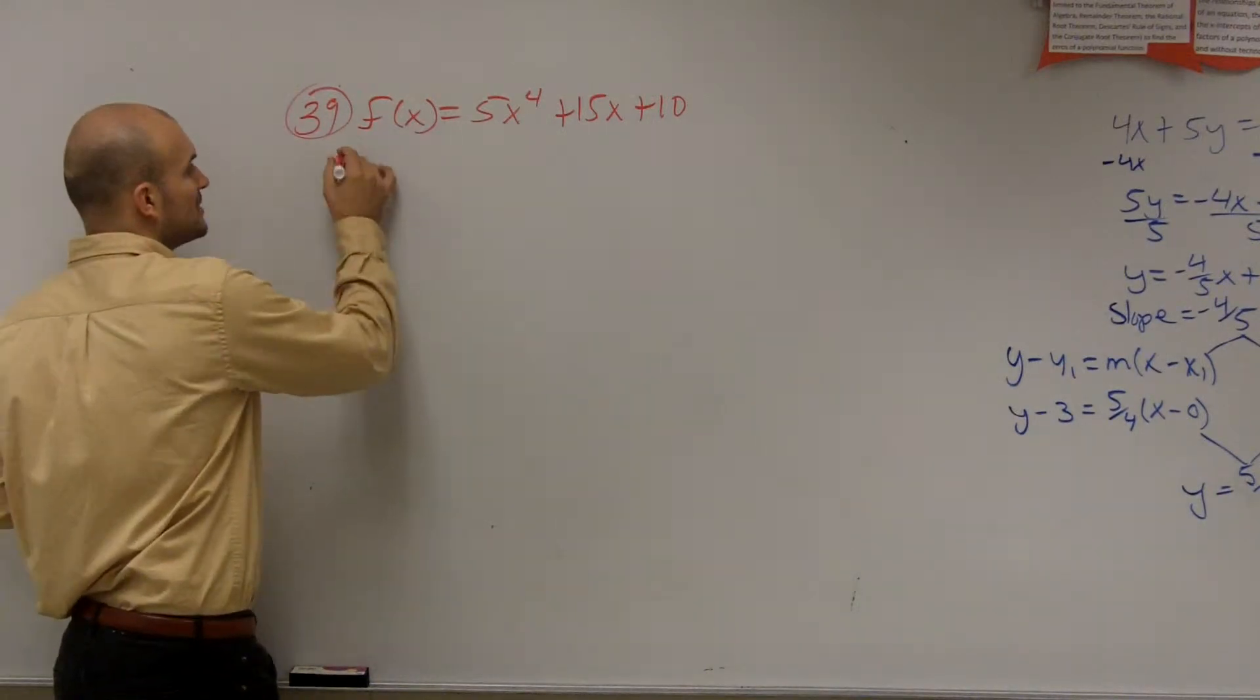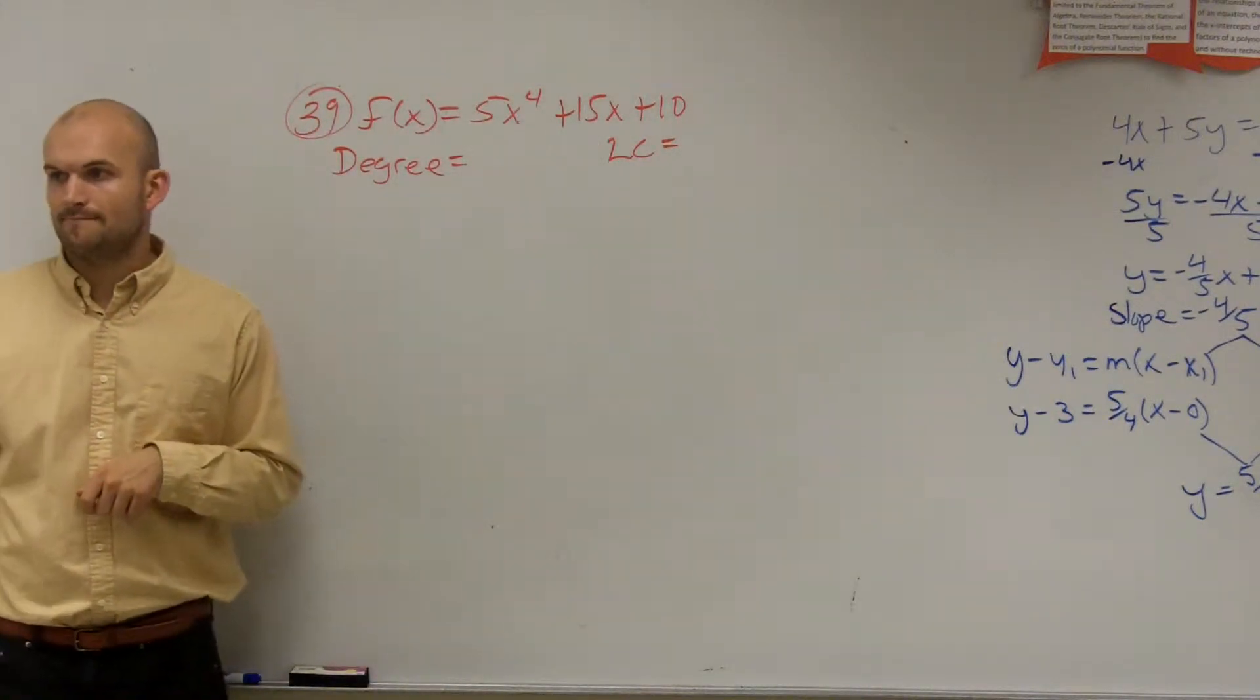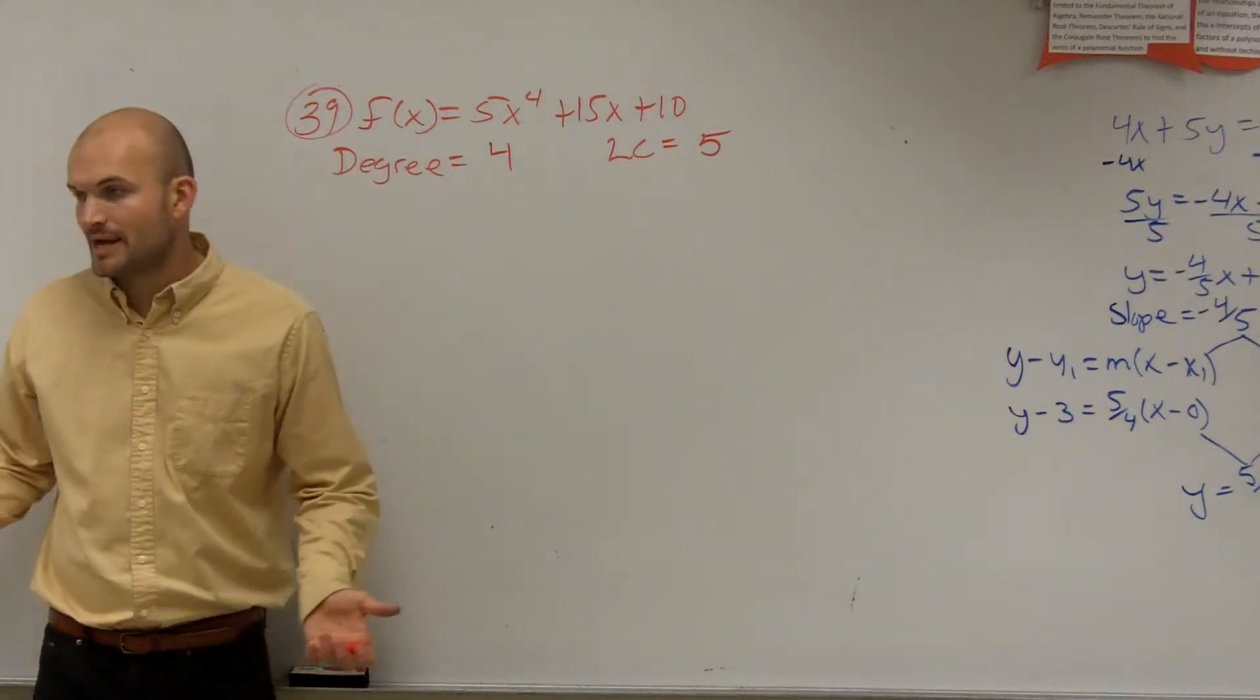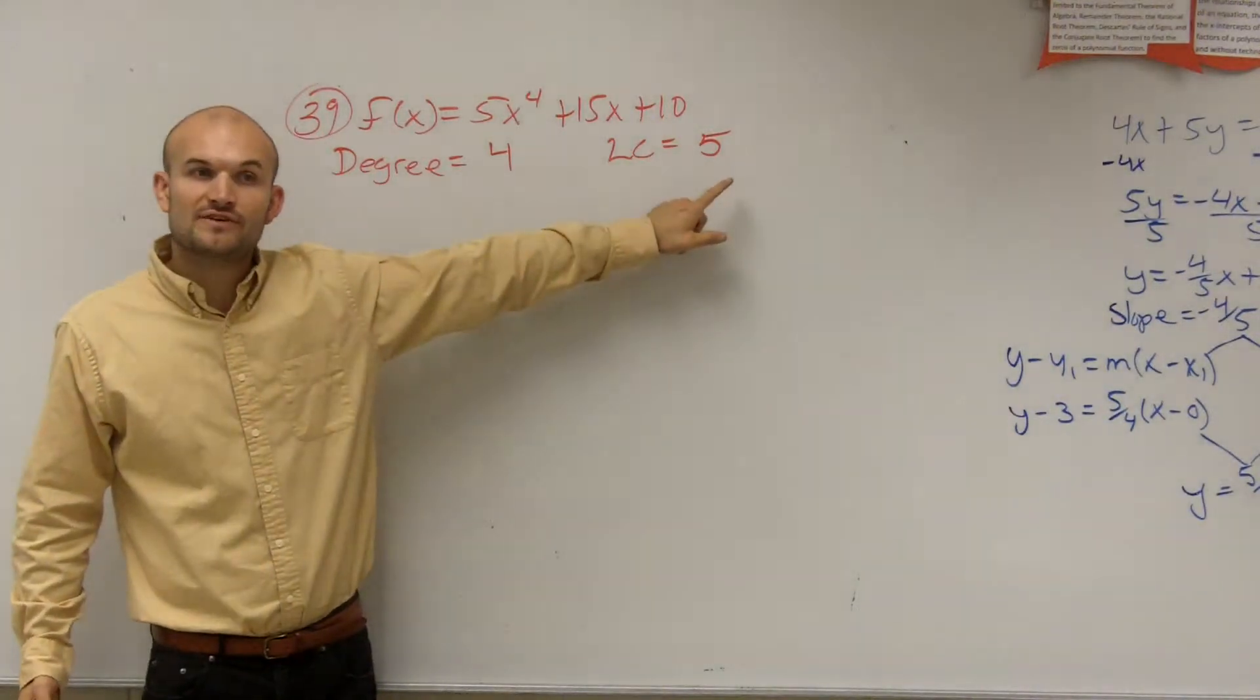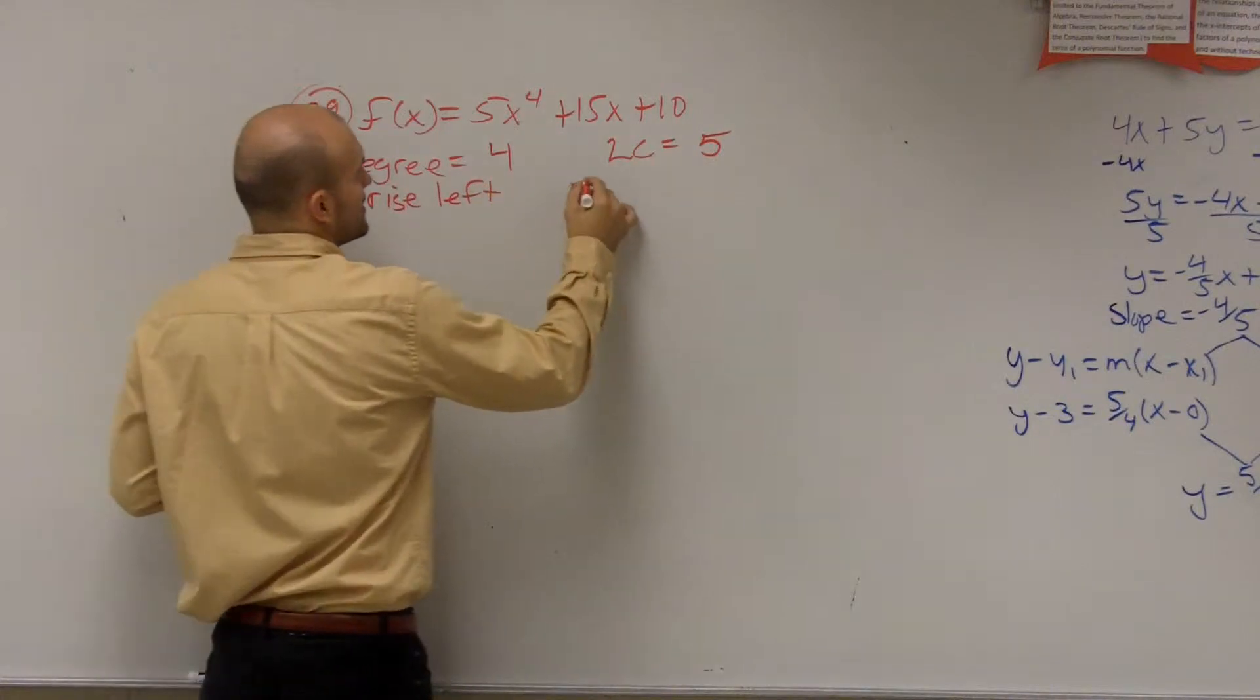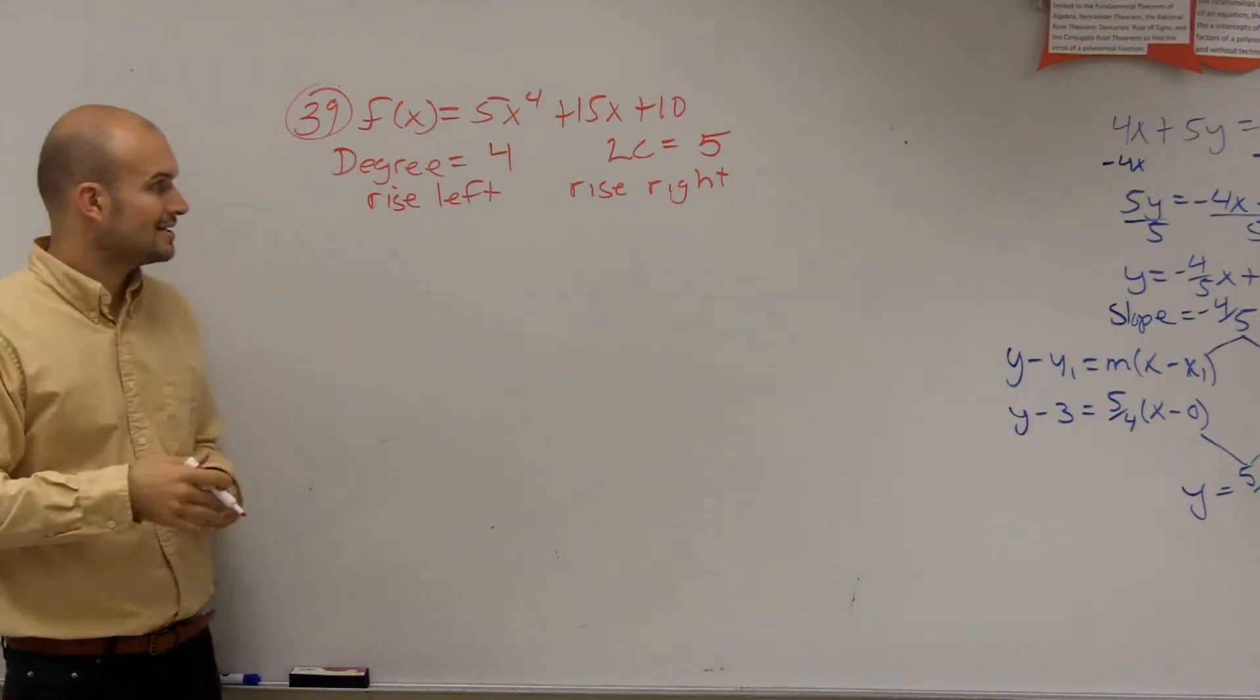So the end behavior, remember, is going to be determined by the degree and your leading coefficient, right? So I look up here and I say, what is my degree? Well, my degree is 4, and my leading coefficient is 5. Now, remember, you're going to have to go back and look at your leading coefficient test. But when you have an even degree and a positive leading coefficient, your graph is going to rise left and rise right. That was in your notes. So you're going to want to rise left and then rise right. Even degree, positive leading coefficient. So that's your end behavior. Done, got that out of the way.